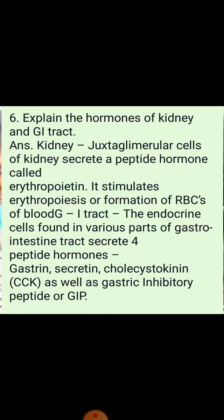Question number 6: Explain the hormones of the kidney and gastrointestinal tract. The heart, kidney, and gastrointestinal tract also secrete a few hormones that play a very important role. The juxtaglomerular cells of the kidney secrete a peptide hormone known as erythropoietin, and this hormone stimulates erythropoiesis — that is, the formation of RBCs.